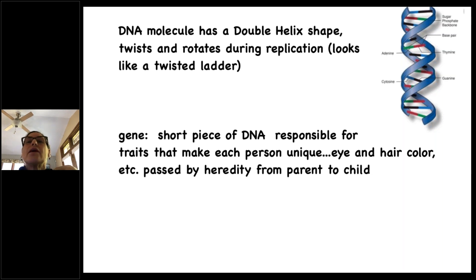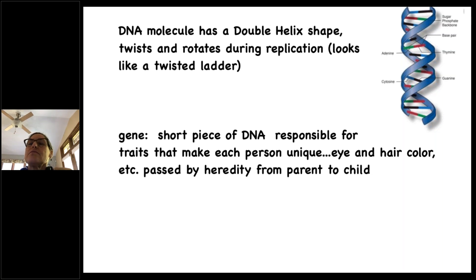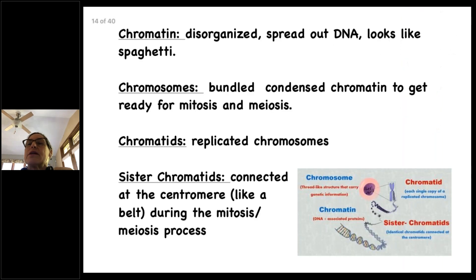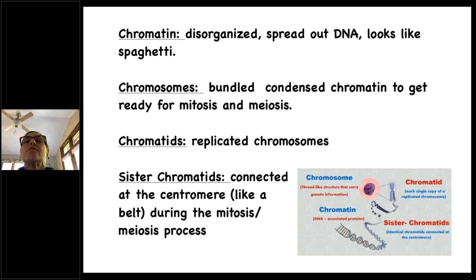A gene is a short piece of DNA responsible for traits that make each person unique — eye and hair color, for example. Genes are passed by heredity from parent to child. Chromatin is disorganized, spread-out DNA that looks like spaghetti. When the cell is ready to divide, the chromatin gets bundled and condensed and becomes chromosomes, and then they're ready for mitosis and meiosis.